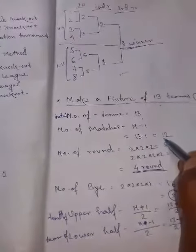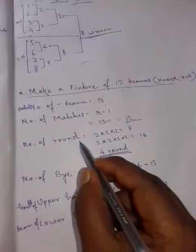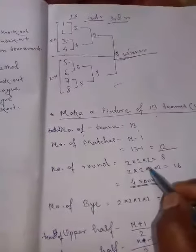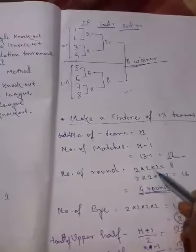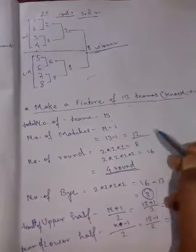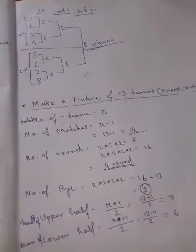Number of rounds, कितना होगा यहां पे? अब देखिए, number of rounds अगर देखा जाए तो power of 2 के equal हम लोग देखते हैं। Number of rounds मतलब power of 2, जितने सारे power of 2 लगेगा उतना होगा।